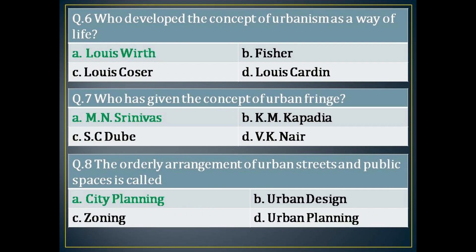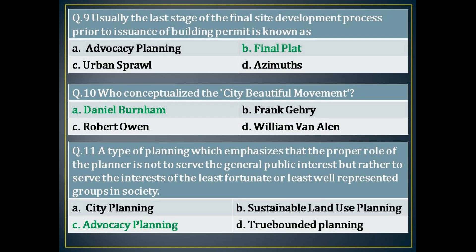The sixth question: who developed the concept of urbanism as a way of life? The answer is: Louis Vieth. The seventh question: who has given the concept of urban fringe? The answer is: M.N. Strinevers. The eighth question: the orderly arrangement of urban streets and public spaces is called? The answer is: city planning. The ninth question: usually the last stage of the final site development process prior to issuance of a building permit is known as? The answer is: final plat.